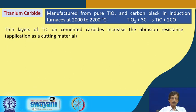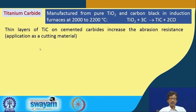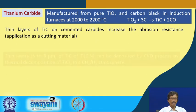Thin layers of titanium carbide on cemented carbides can increase abrasion resistance, making it useful as a cutting material — similar to silicon carbide. Titanium carbide is thus an example of a metallic hard material used as a cutting material with high temperature withstand and stability.